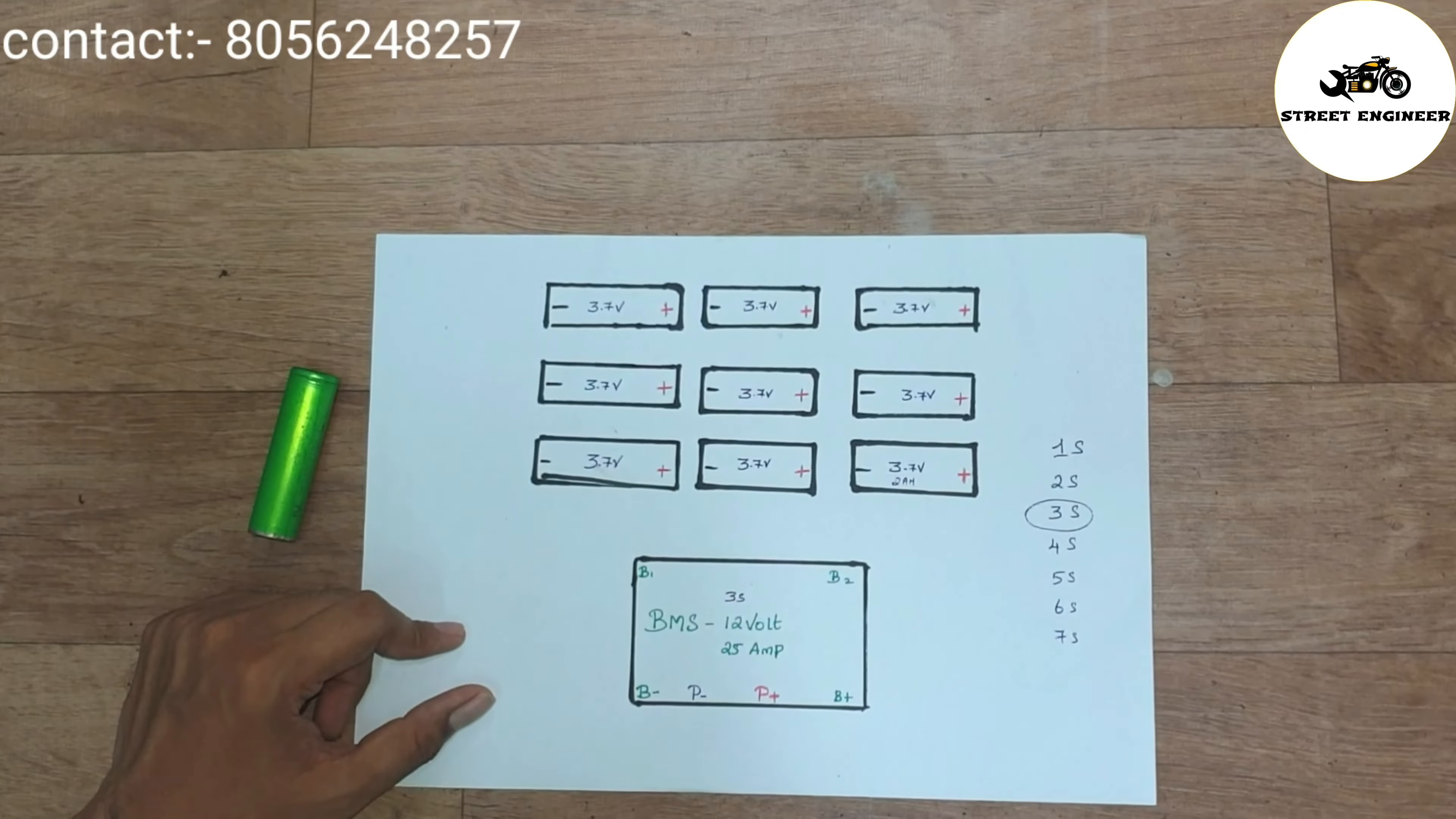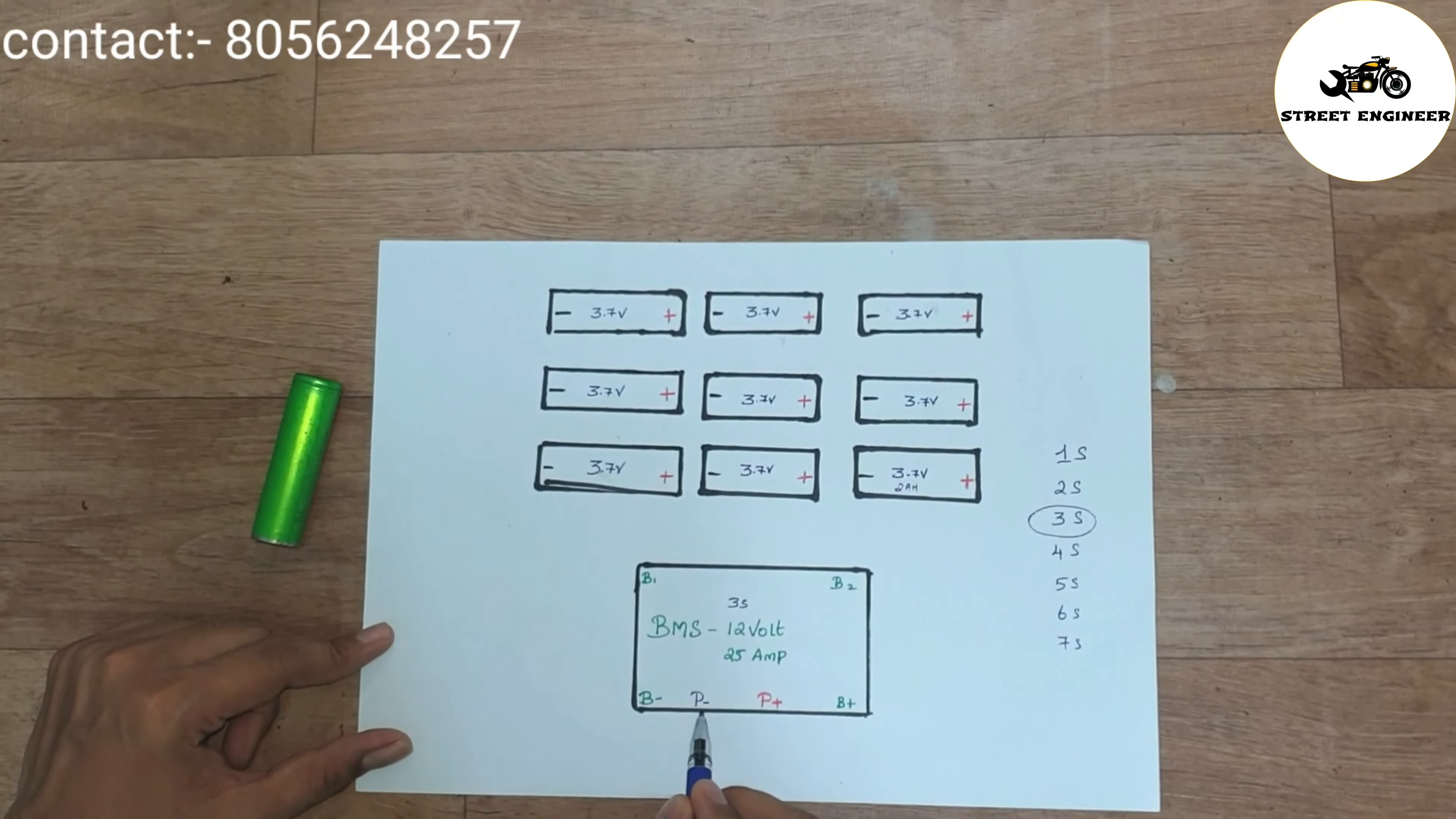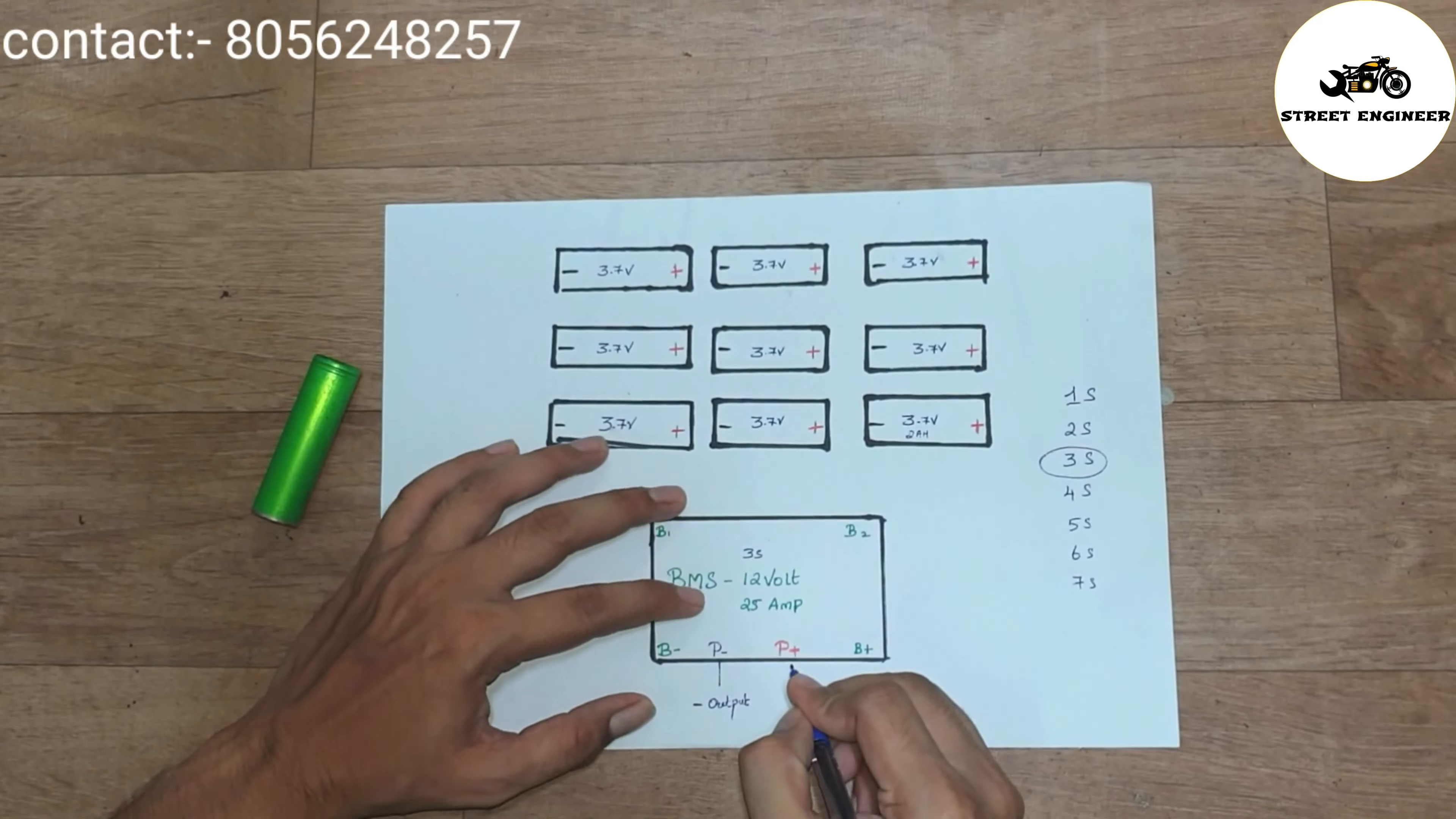And we need to connect these 3 cells in series connection to make a 12V battery pack. P- is negative output of 12V and P+ is positive output of 12V.